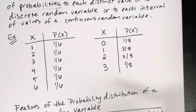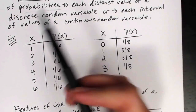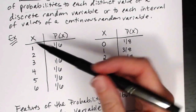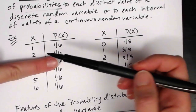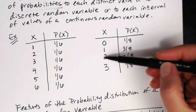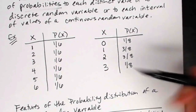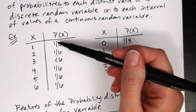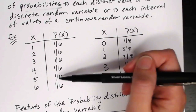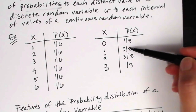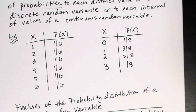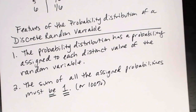Both of our examples meet these criteria. In the die example, all six outcomes have probabilities, and one-sixth times six equals six-sixths, which is one. In the boys example, one-eighth plus three-eighths plus three-eighths plus one-eighth equals eight-eighths, which is one. So both distributions are valid — every outcome has a probability, and they all sum to exactly one.